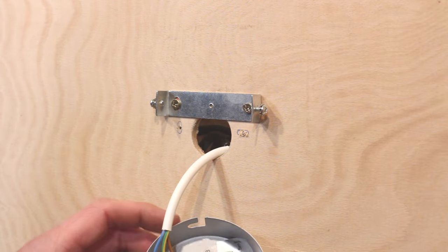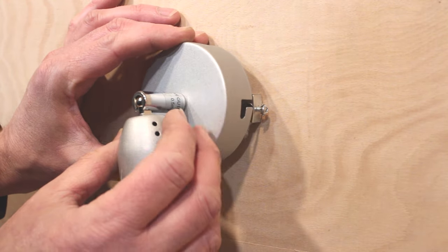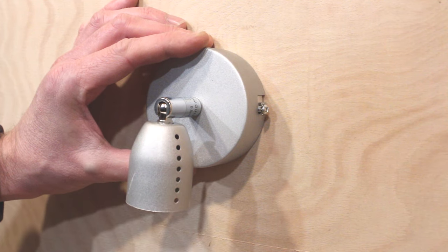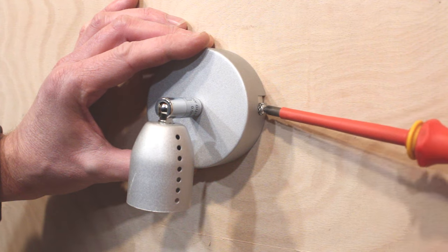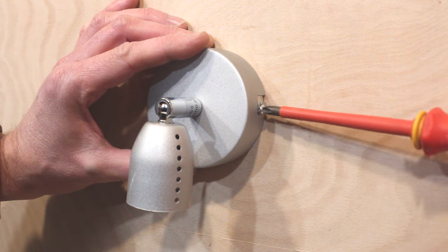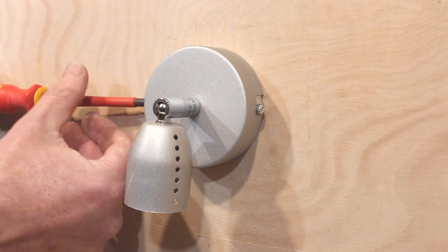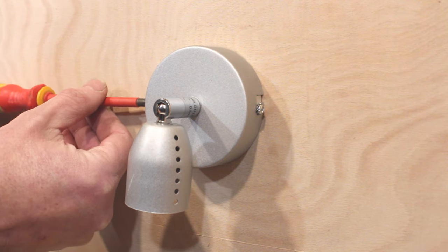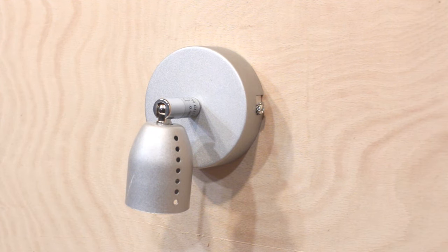And then take the light fitting itself. Just line it up with those two screws. Give it a twist. And then take your screwdriver. Just tighten one side. And the other. Which you can't see in the picture. But a screw is the same on the other side as well. There it is nice and tight on both sides. Job done.